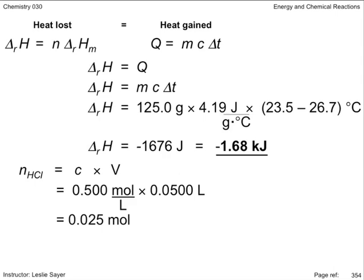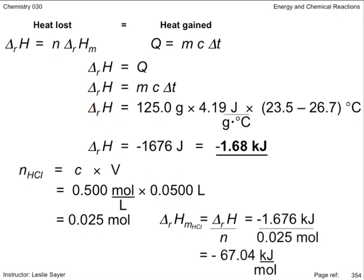So if 0.025 moles of acid produces 1.68 kilojoules of energy, how much energy is produced by the reaction of 1 mole of acid? We determine this by rejigging our enthalpy equation so that it's in terms of molar enthalpy. So 1 mole of acid produces 67.04 kilojoules of energy.